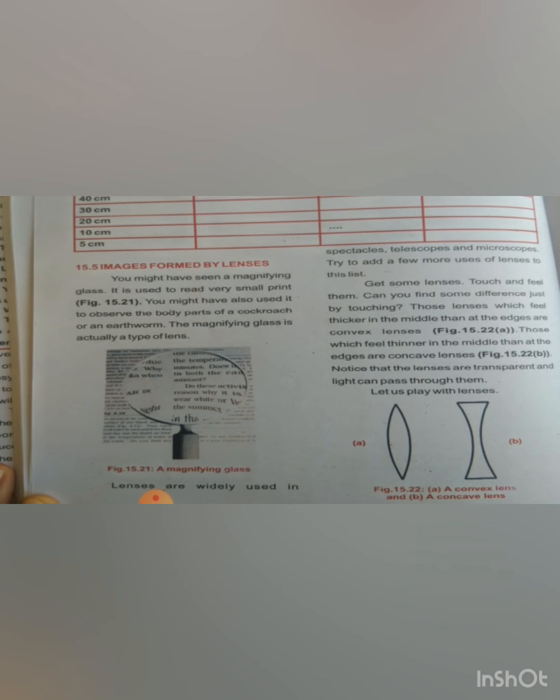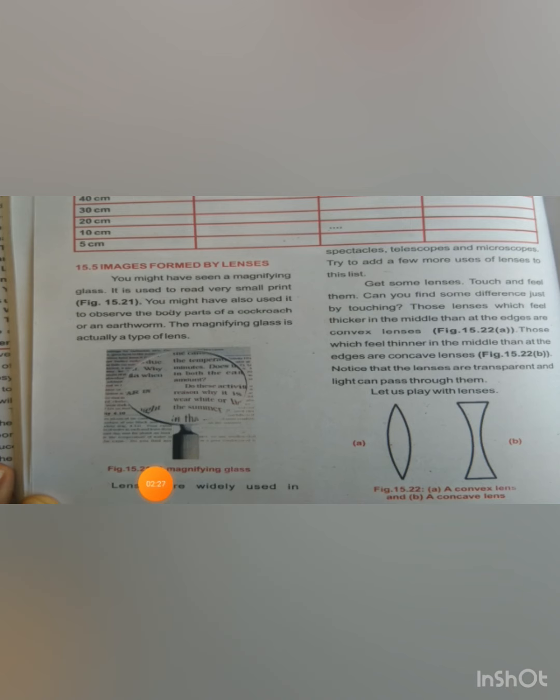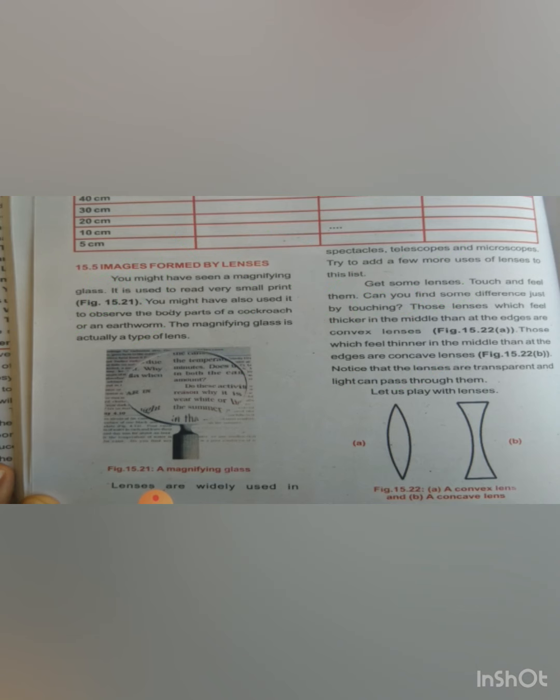Can you find differences just by touching? Lenses that feel thicker in the middle and thinner at the edges are convex lenses. If you draw it: the lens is thick in the middle but thin at the edges — this is a convex lens. So a convex lens is one that is thick in the middle and thinner at the edges.